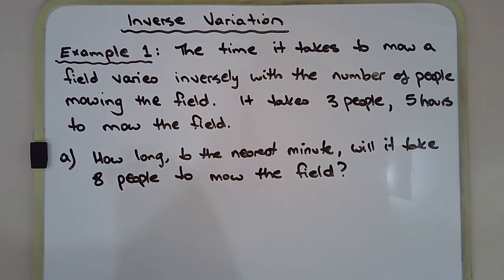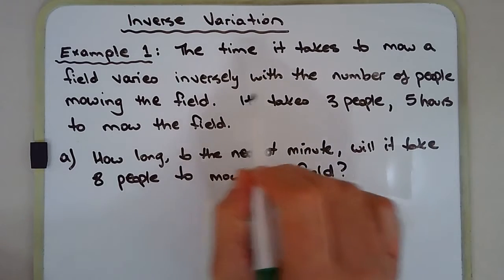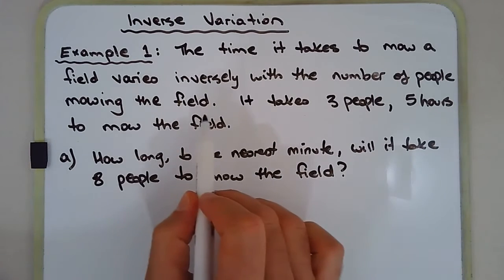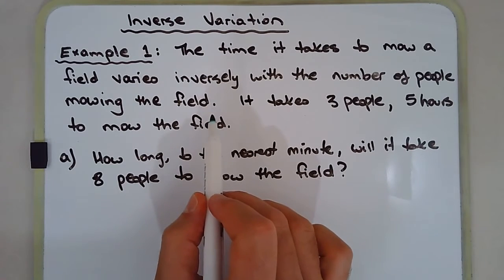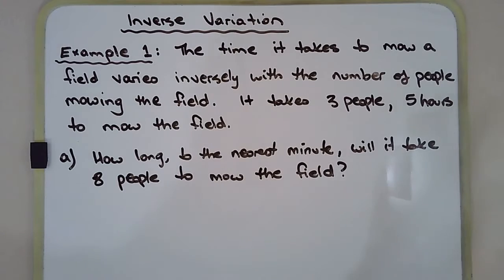The time it takes to mow a field varies inversely with the number of people mowing the field. Now that makes sense, or at least assuming all things ideal. The more people you put onto a job, the less time it should take. So the greater the number of people, say double the number of people, it should halve the amount of time it takes, in theory.